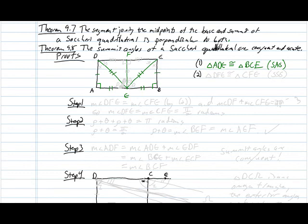Now if we look at the other pair of triangles — triangle DFE — since F is the midpoint of segment DC, DF has the same length as FC, and side FE is shared by both triangles. So we end up with a congruence of triangle DFE and triangle CFE by the side-side-side theorem. The congruence of these two pairs of triangles is going to give us nearly everything we want.